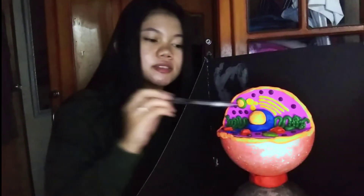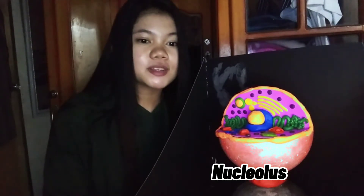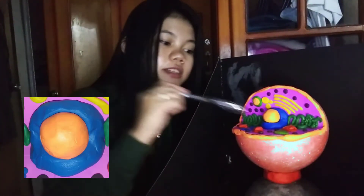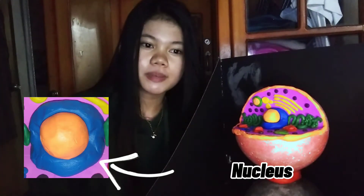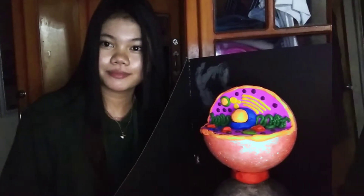keeping other substances out. Next, this orange here is our nucleolus. It is a region found within the cell nucleus that is concerned with producing and assembling the cell's ribosomes. This blue here is our nucleus, which is a highly specialized organelle that serves as the information and administrative center of the cell.